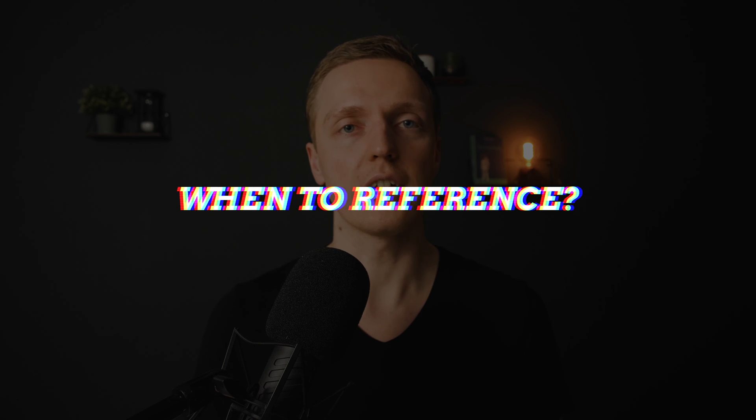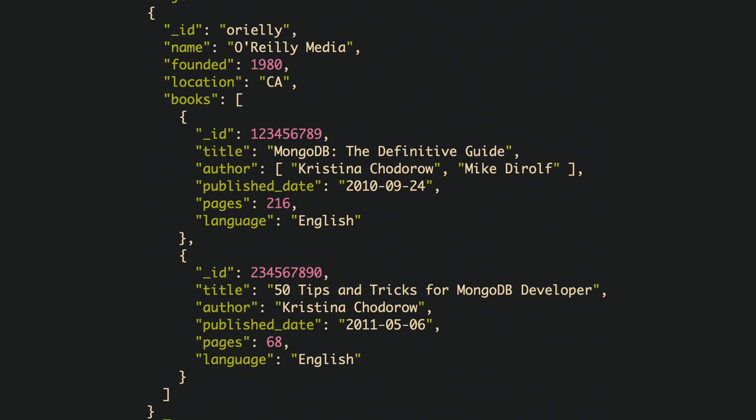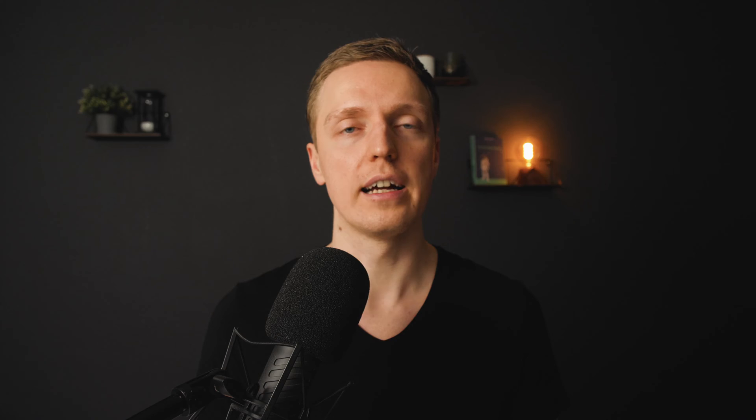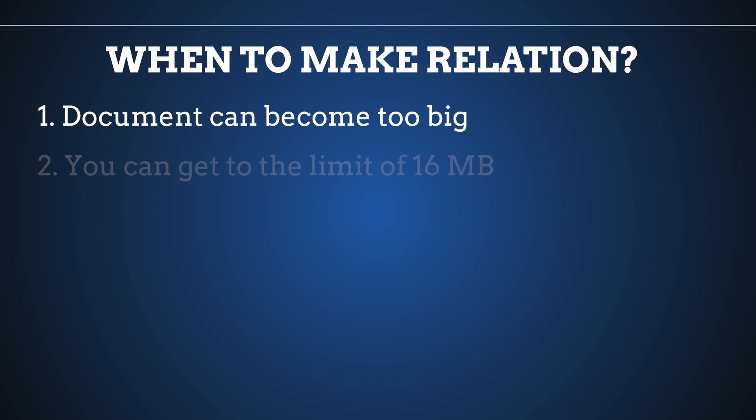Rule number four is: use referencing if you really need to. Embedding is not always suitable — first of all because our documents can be really huge. The maximum size in MongoDB of a single document is 16 megabytes. It may sound like a huge amount of data for strings, but you can easily hit it if you're embedding a lot of data. For example, here we have our bookstore and all books inside it. The main problem is that we will get newer and newer books every time, and at some point our document will be too huge to support and might reach this 16 megabyte limit.